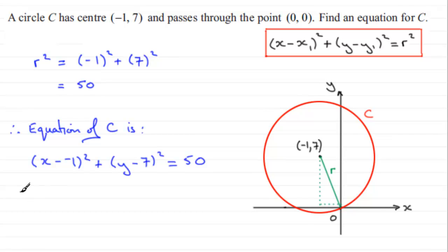I'm just going to clean this up and you've got x plus one all squared plus y minus seven all squared equals 50. There's no real need to expand the brackets I don't think. Okay, just leave it like that should be fine.